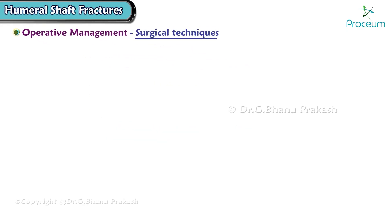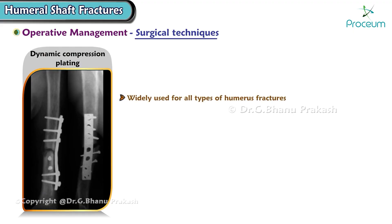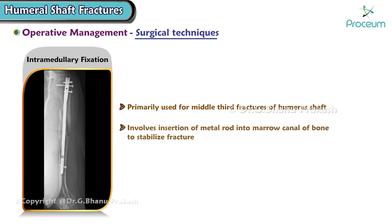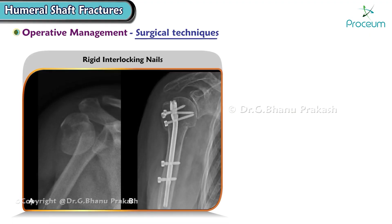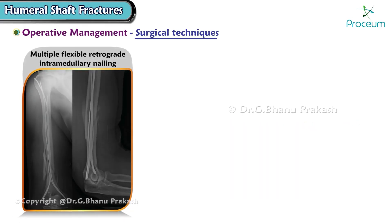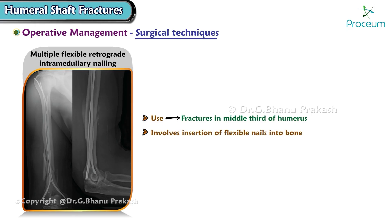Various surgical techniques are employed for humeral shaft fractures. Dynamic compression plating is widely used for all types of humerus fractures and is often considered the gold standard, involving a plate and screws to stabilize the fracture. Intramedullary fixation is primarily used for middle third fractures, involving insertion of a metal rod into the marrow canal. Rigid interlocking nails are inserted through the rotator cuff under fluoroscopic vision to provide internal fixation. Multiple flexible retrograde intramedullary nailing, also used for middle third fractures, involves inserting flexible nails across the fracture site to provide stabilization.